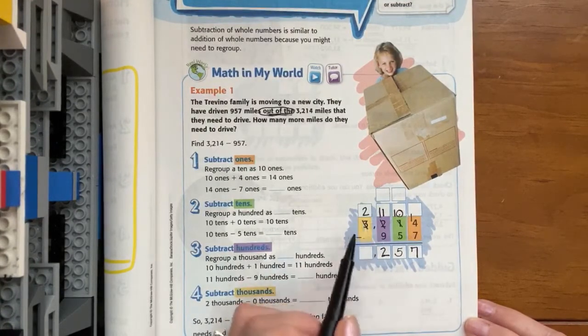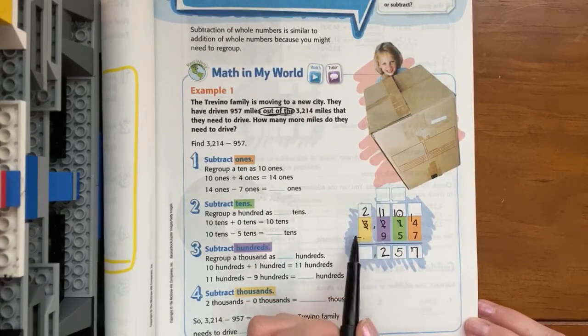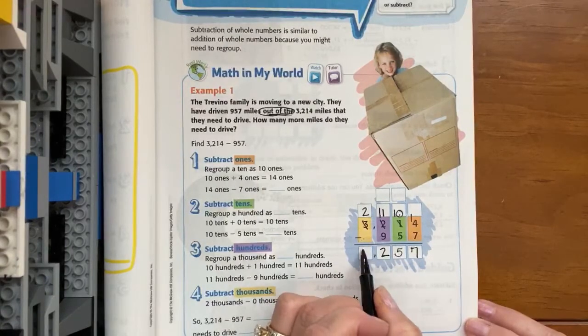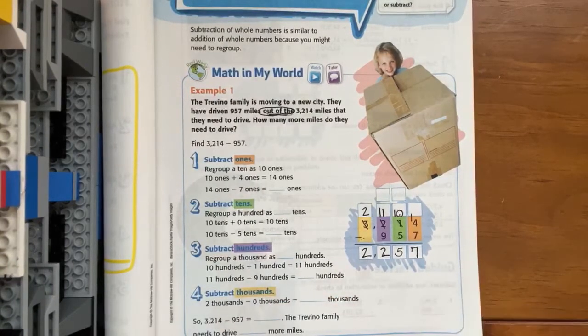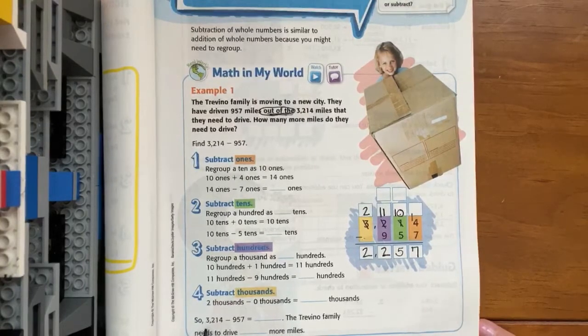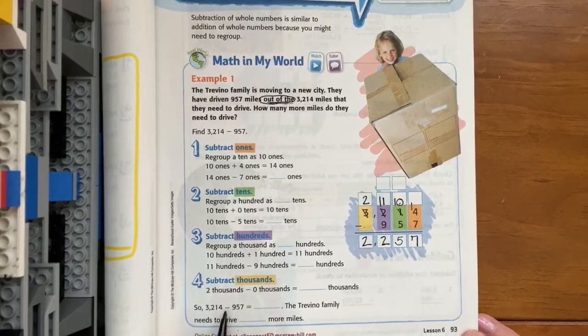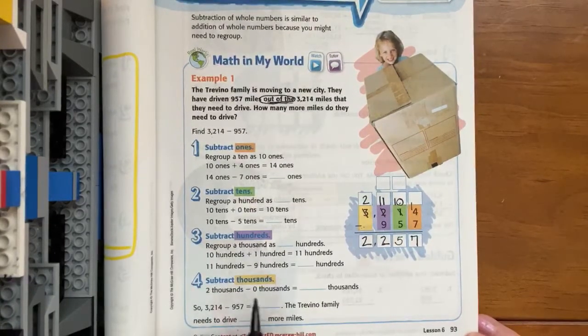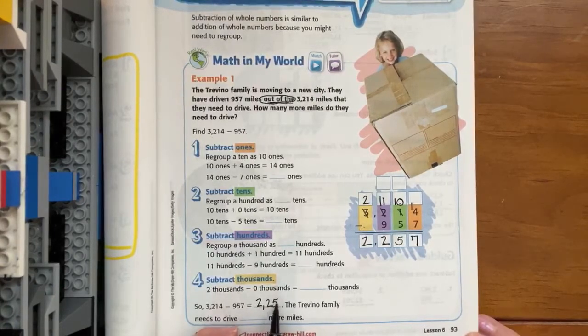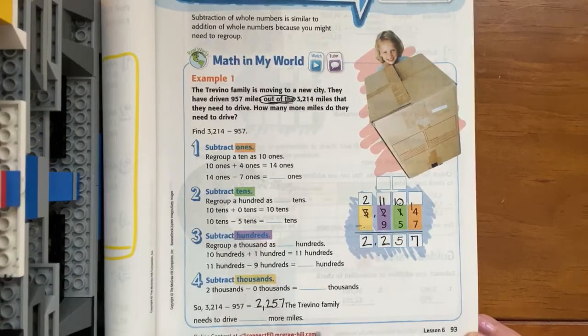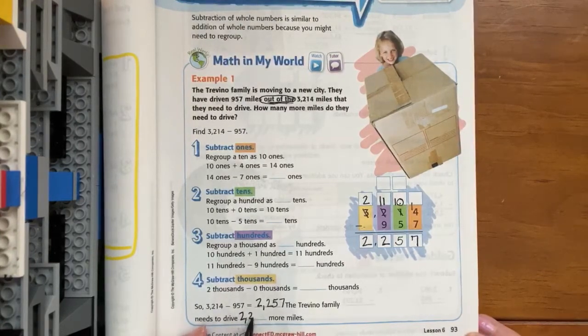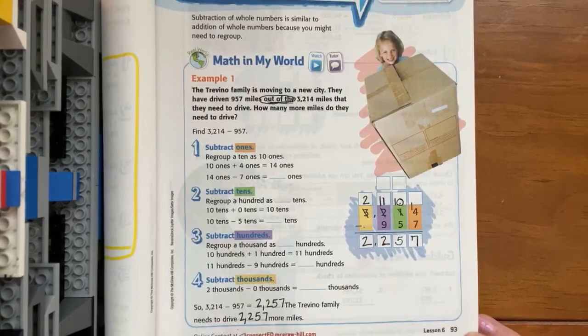That leaves us with two groups of a hundred because two plus nine is 11. And lastly in our thousands place, we have two and we're not taking anything away. And so that leaves us with two. So 3,214 minus 957 equals 2,257 miles. So the Trevino family still needs to drive 2,257 more miles.